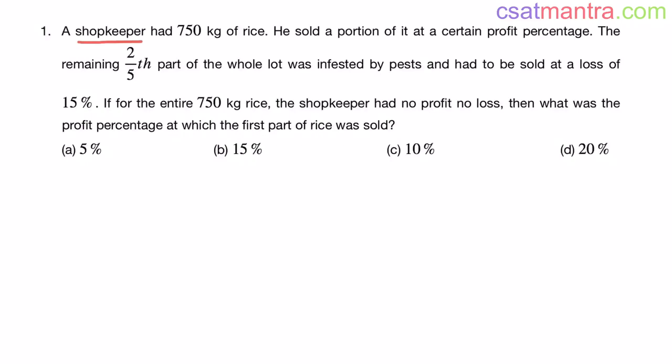A shopkeeper had 750 kg of rice. He sold a portion of it at a certain profit percentage. The remaining two-fifth part of the whole lot was infested by pests and had to be sold at a loss of 15%.